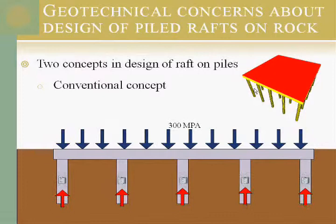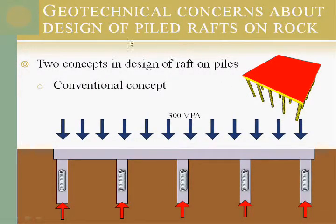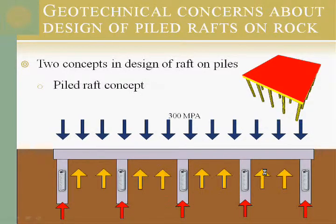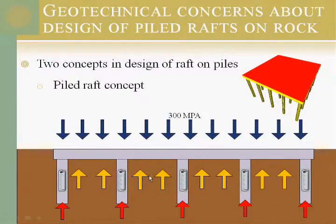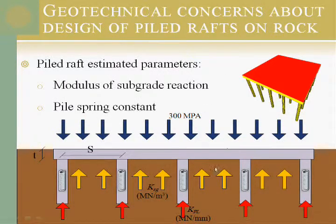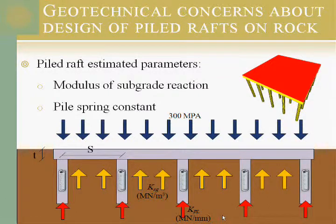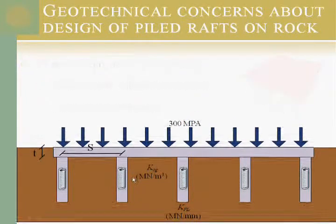Now we reach the research on geotechnical concerns about designing a pile raft on rock. There are two concepts: the conventional concept assumes stresses from the raft are distributed directly to the piles with no load sharing from surrounding soil or rock; the pile raft concept considers the spring constant of the pile and the subgrade reaction of the rock. In both modeling approaches, we assume values for the modulus of subgrade reaction and the pile spring constant — these values have some ranges, and how we assume them can significantly affect our design, which is what the research explores.